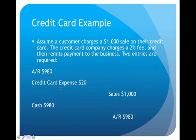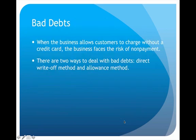The subsequent journal entry records when the credit card company eventually remits the money. At that point, we debit cash for $980 and credit accounts receivable for $980 to remove it, since we have now received the payment. That's how the credit card transaction works across both journal entries.